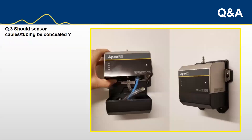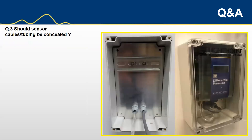Question three: should sensor cables and tubing be concealed? Absolutely. I'd recommend that in certain locations of the cleanroom, the cables and tubing should be concealed. It's very prudent to have this built in — that way you're able to do your clean-downs a lot easier and obviously protect the sensors themselves as well. So yes, it's very important that the sensors should be concealed.